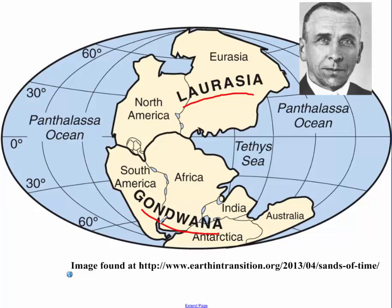This theory was put forward by a German meteorologist named Alfred Wegener. He proposed that there was at one point a large continent named Pangaea — P-A-N-G-A-E-A — and that Pangaea was this one continent where all of the land was massed together, and then it slowly broke up and spread apart over time.